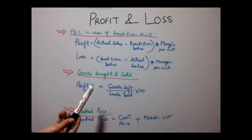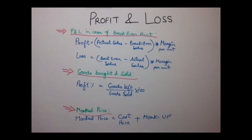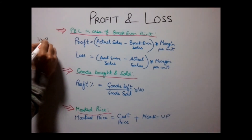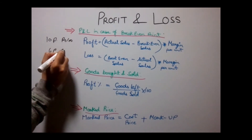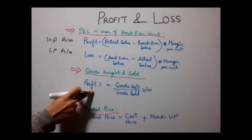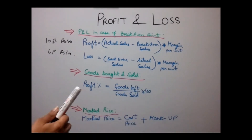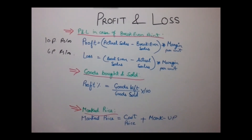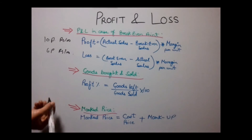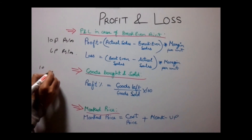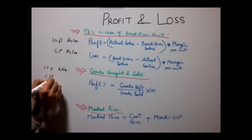When goods are bought and sold at the same price, profit percentage equals goods left divided by goods sold, multiplied by 100. For example, a shopkeeper purchases 10 products at Rs.100 and sells 6 at Rs.100. For markup price, the formula is: Markup Price = Cost Price + Markup. If cost price is Rs.10 and markup is Rs.2, the markup price equals Rs.12.